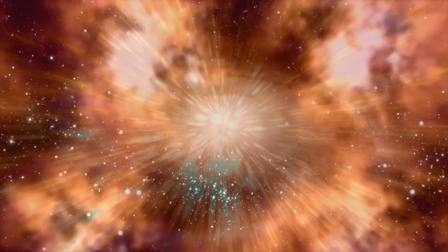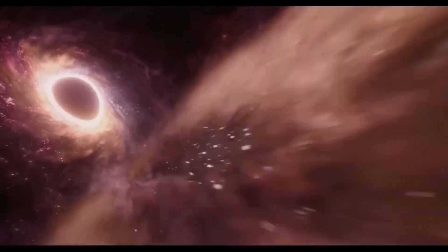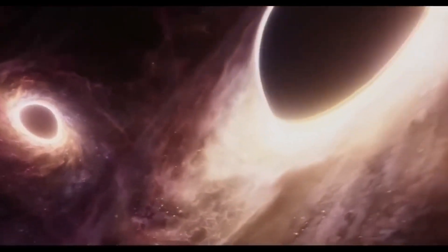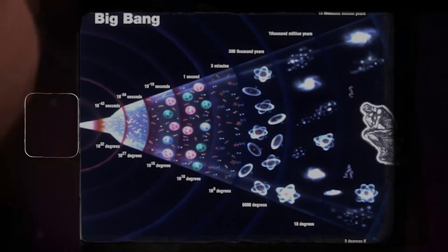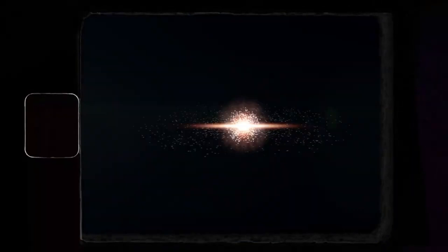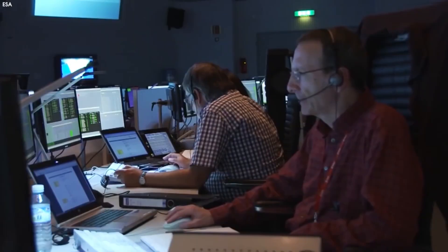But perhaps the most compelling evidence in support of Penrose's theory comes from the discovery of ultramassive black holes near the dawn of time. These cosmic behemoths, with masses exceeding a billion suns, challenge our understanding of how such structures could have formed so rapidly after the Big Bang. Their existence lends credence to the idea that information from one universe can seamlessly transition to the next, as if carrying the memories of past epochs forward into eternity.